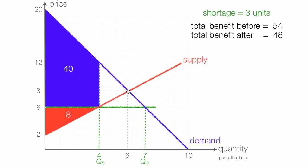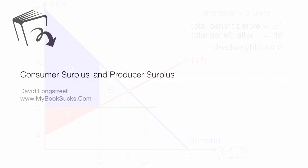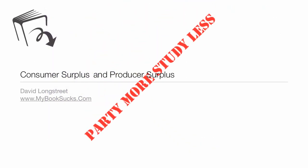Total benefit before the price ceiling is equal to 54. Total benefit after the price ceiling is 48. So the dead weight loss is 6 — there's a net loss of 6. We call it dead weight loss, and that's that gray triangle area. I could have also calculated the area of the two triangles separately: the top triangle would be 4 and the bottom triangle would be 2, and those two added together equal 6. One thing you might want to do is watch this again and compare consumer surplus before and after, and also producer surplus before and after, to see who are the winners and the losers.